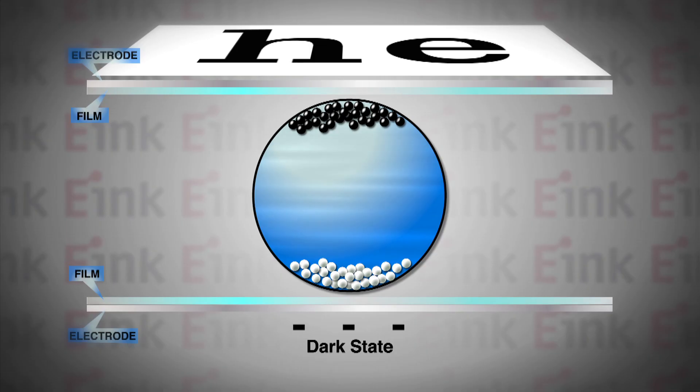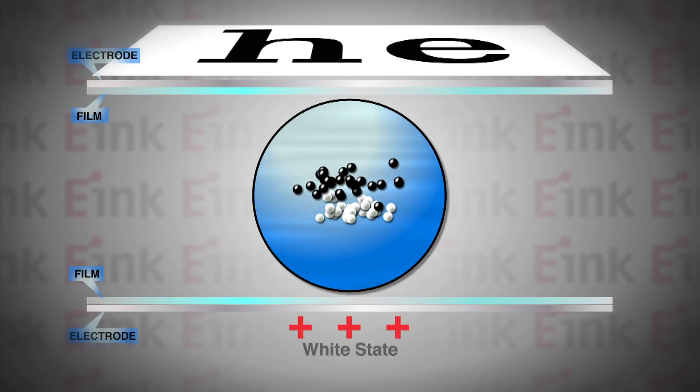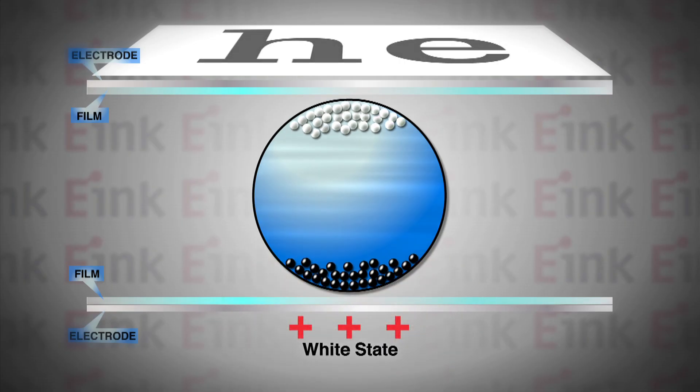Simultaneously, the white particles move to the bottom where they are hidden to the viewer. By reversing this process, the white particles are driven to the top of the capsule, making the top surface appear light.